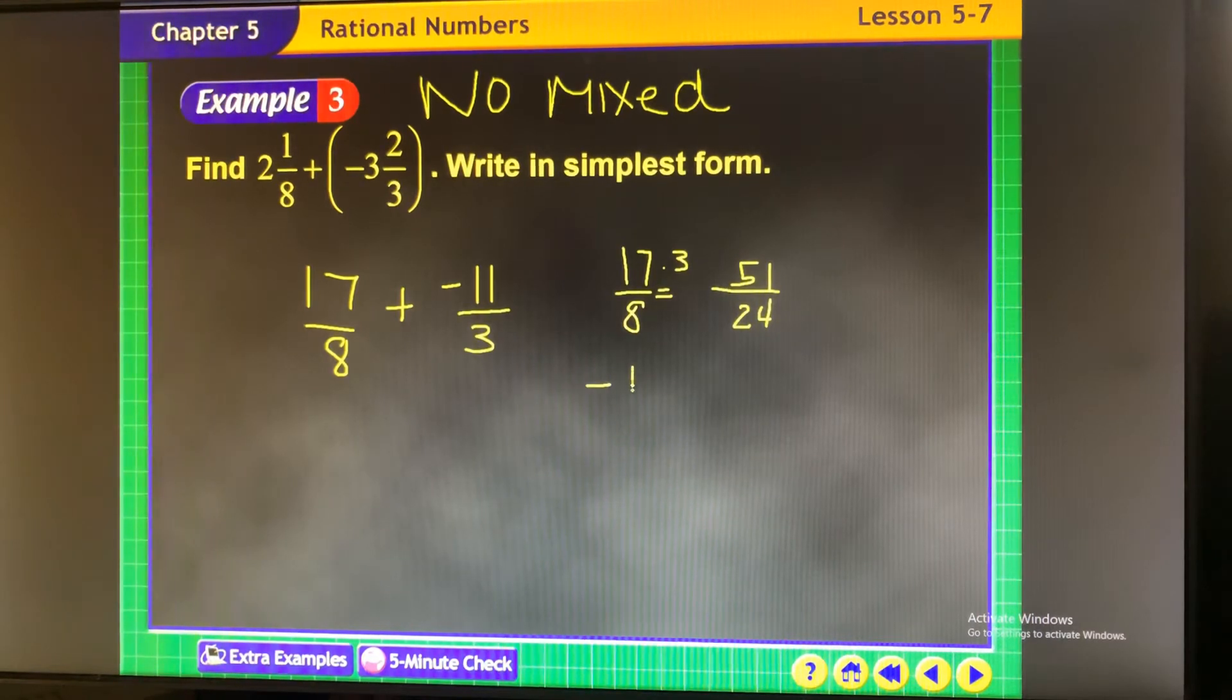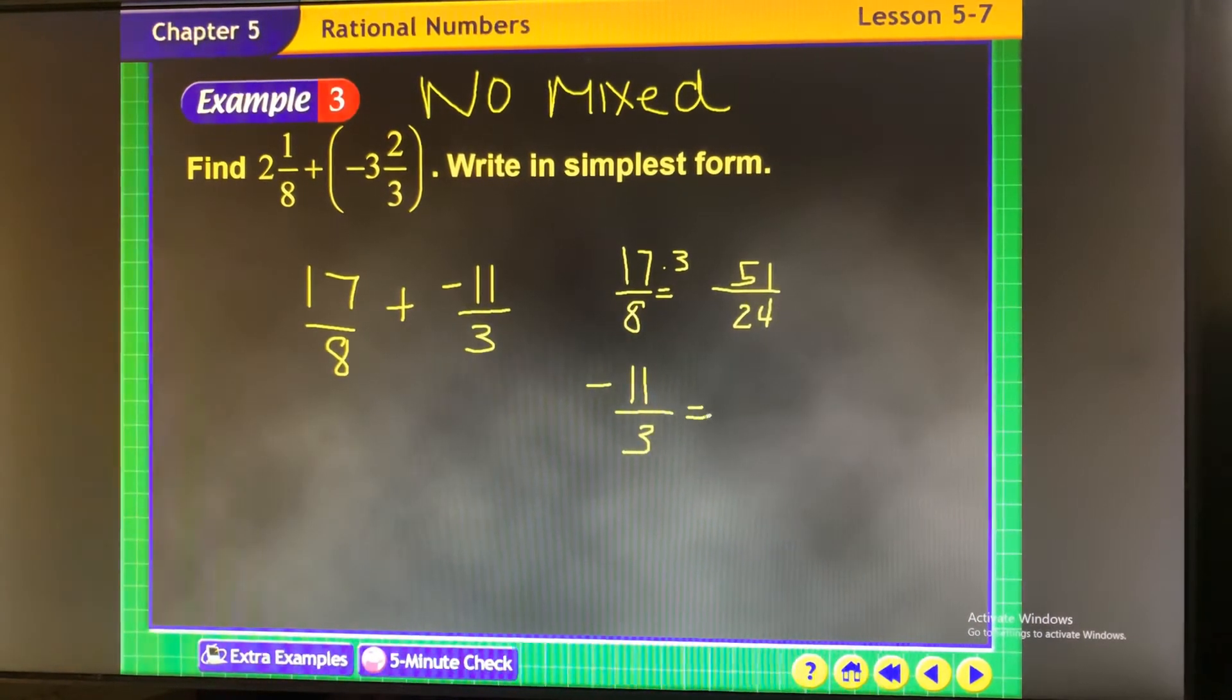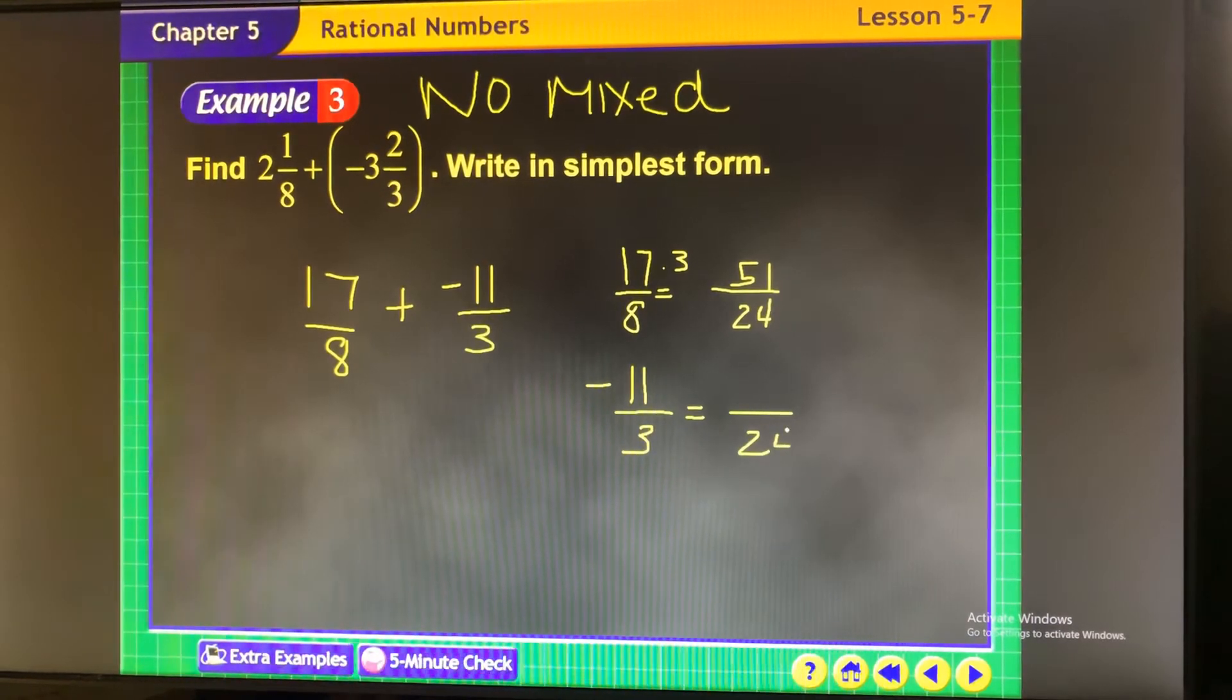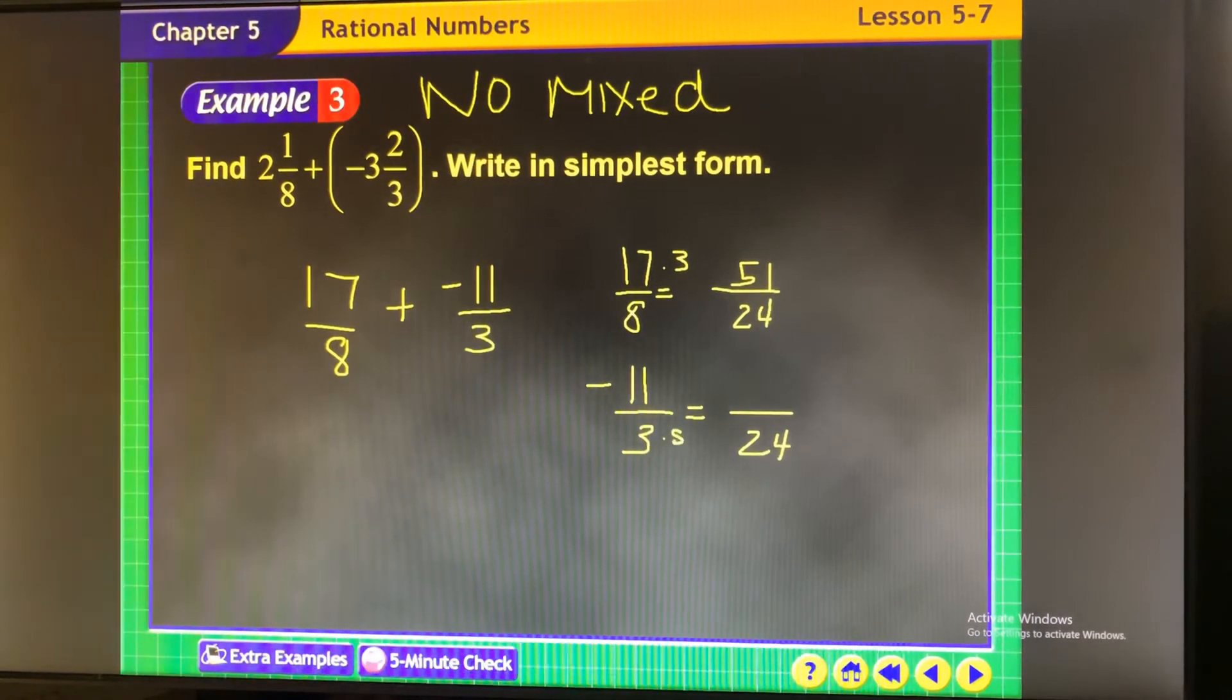And then you have negative 11 thirds. Don't drop that negative, by the way. You have 24. You're multiplying this by 8. So this by 8. So negative 88.